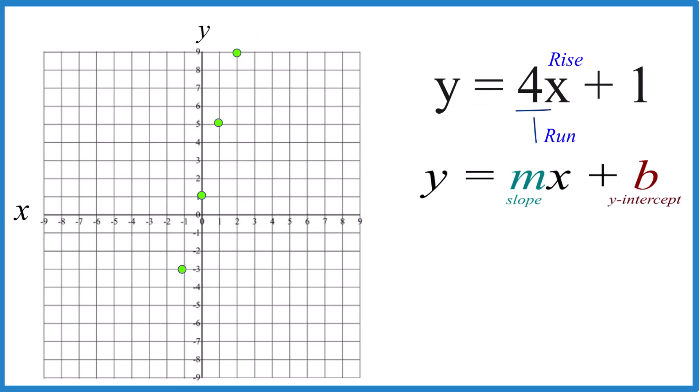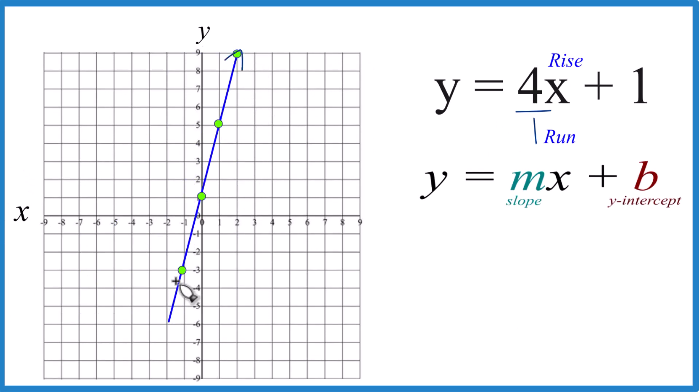That's on our graph here. This is the line for y equals 4x plus 1. Let's put a line through that. And then you could put arrows to show that this goes to infinity. And there you have the line, y equals 4x plus 1, graphed using slope-intercept form.